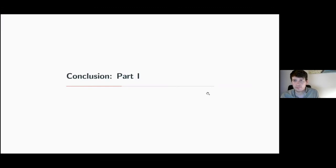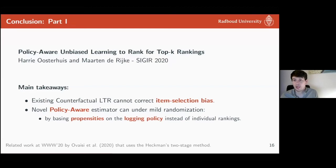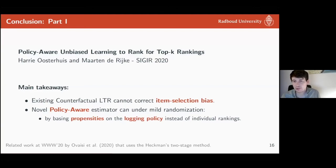That was the first paper. I talked about item selection bias, showed why existing methods cannot correct for it, and showed that with mild randomization and the policy-aware estimator you can correct for this bias. The key is to base your propensities on the logging policy instead of individual rankings. The existing method conditions on the exact position; we condition on the expectation of where an item will be shown — which means conditioning on the logging policy.